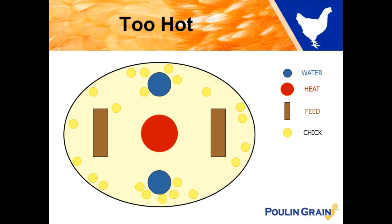Here your baby chicks are scattered throughout the brooder along the perimeter of it, indicating as they are away from the heat source that they are too hot and the temperature needs to be adjusted slightly.